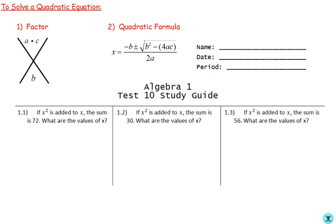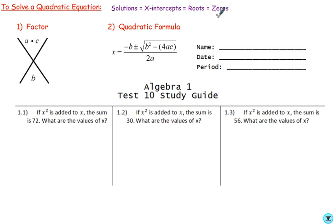Those are the two main ways we solve these. One final vocabulary note: when we solve a quadratic equation, the solutions represent the x-intercepts — where the graph of a quadratic function crosses the x-axis. Two other words for that are roots and zeros. Pause if you need to finish copying that down.